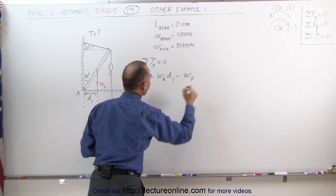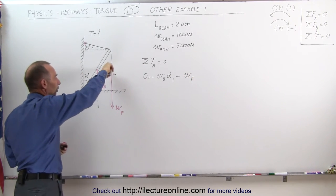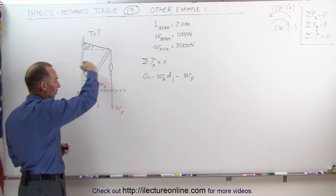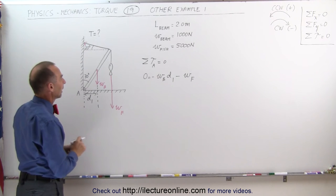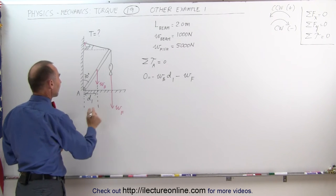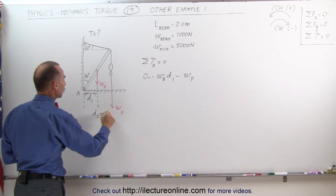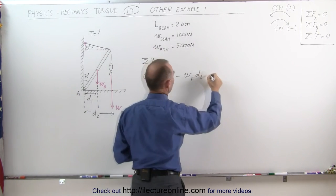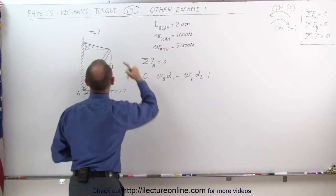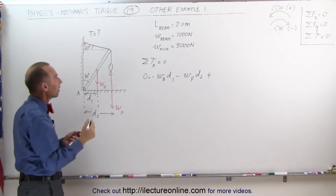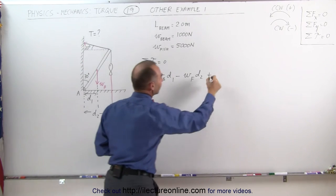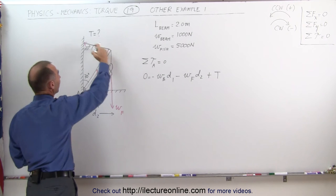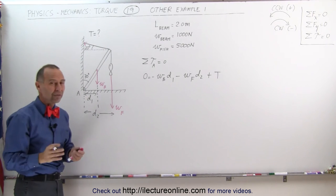Minus the weight of the fish, because again the torque of the fish causes a clockwise rotation — that's a negative torque — times the perpendicular distance D2 from the line of action of the force to the pivot point. Then plus, because the tension causes a counterclockwise torque — that's a positive torque — the tension times its perpendicular distance. Finding the perpendicular distance from the line of action of the tension to the pivot point would be rather difficult directly.